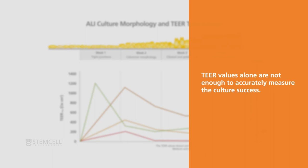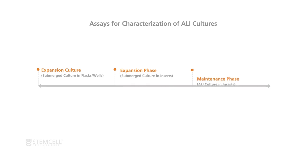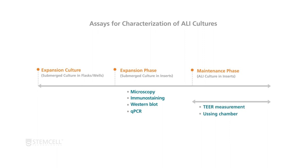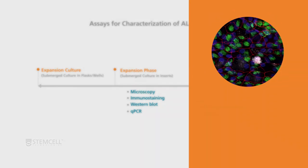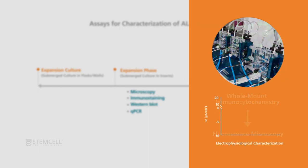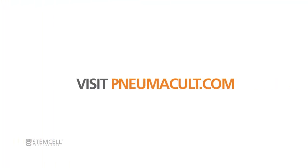Note that TEER values alone are not enough to accurately measure culture success. ALI cultures generated using PneumaCult can also be characterized by other assays. To visualize cell surface markers specific to differentiated cell types, you can perform whole mount immunocytochemistry and then use fluorescence microscopy. To assess ion channel activity in the epithelium, you can perform an electrophysiology study using an Ussing chamber system. For information about our PneumaCult products, visit PneumaCult.com.